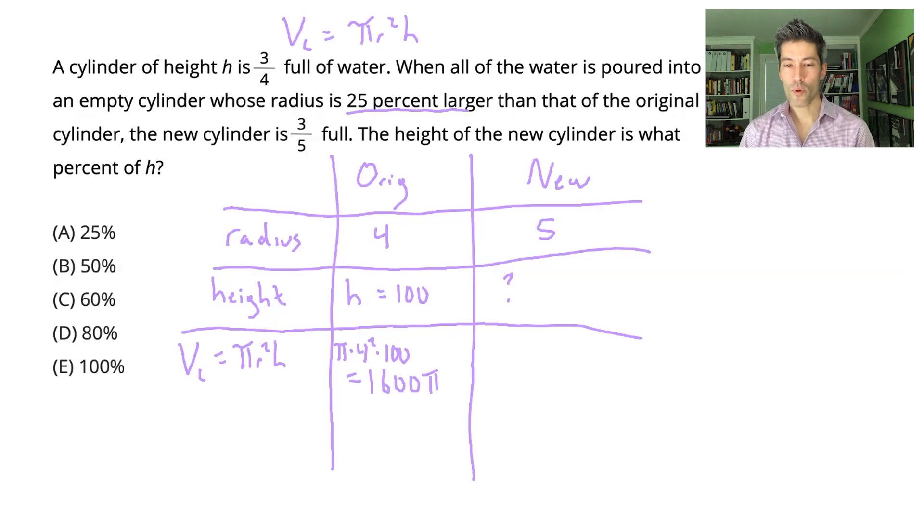But remember, this original cylinder isn't all the way full. It's only three-fourths filled with water. So the amount of water that's actually present here is three-fourths of 1600π. Three-fourths of 16 is 12. So three-fourths of 1600π will be 1200π.